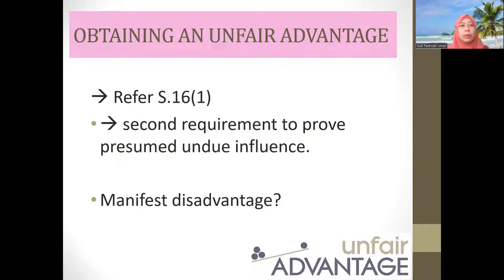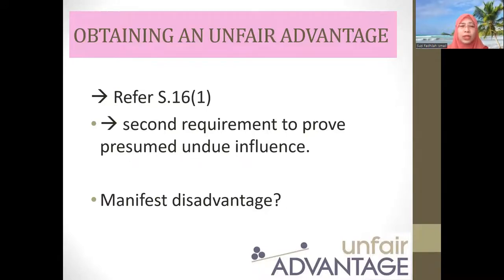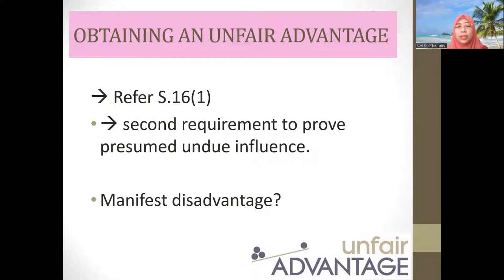For today, we focus on the second element of presumed undue influence. This second element is not relevant for actual undue influence. The second element revolves around unfair advantage — the proper phrasing is 'obtaining unfair advantage.' If you refer to Section 16(1), you can see the words 'unfair advantage,' though it doesn't explicitly state this is the second element for presumed undue influence — that is derived from case law. Unfair advantage is the second requirement to prove presumed undue influence.